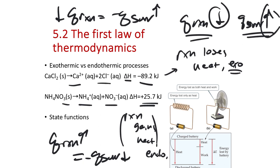The sign of delta H doesn't tell you if the reaction can take place or not — both compounds are water-soluble. The state function that would tell you if a reaction can or cannot take place is delta G, where delta G = delta H minus T times delta S. Predicting if a reaction can take place is a different topic; this chapter is all about — if a reaction occurs — what's the heat change that would accompany that reaction.